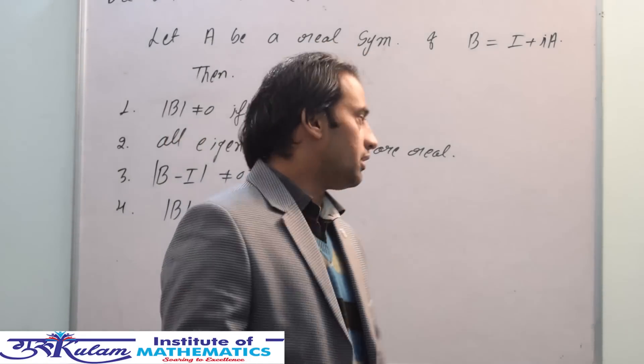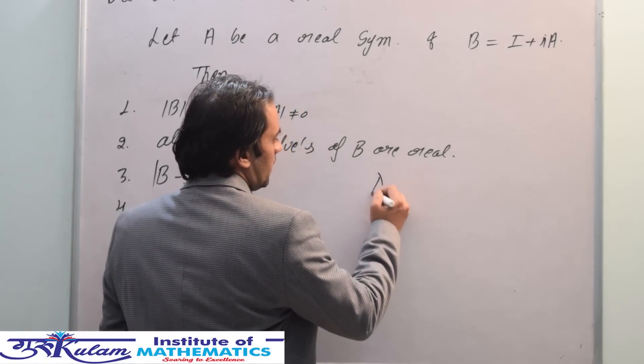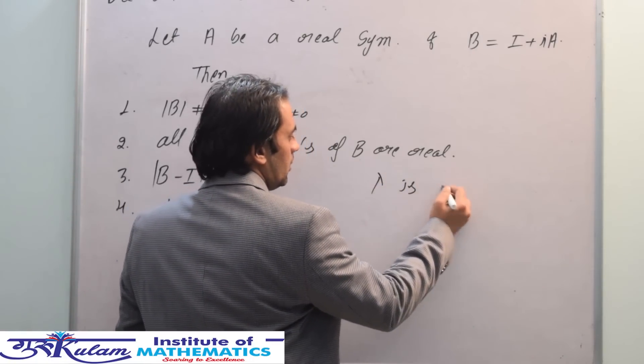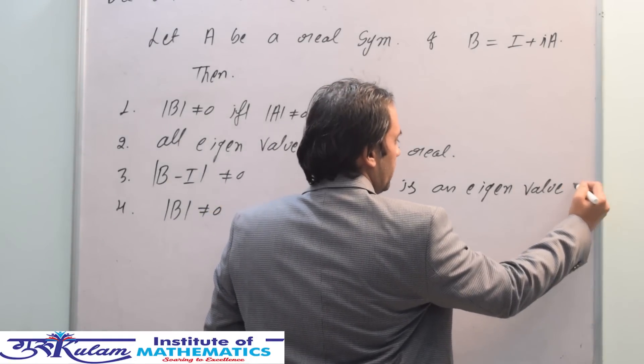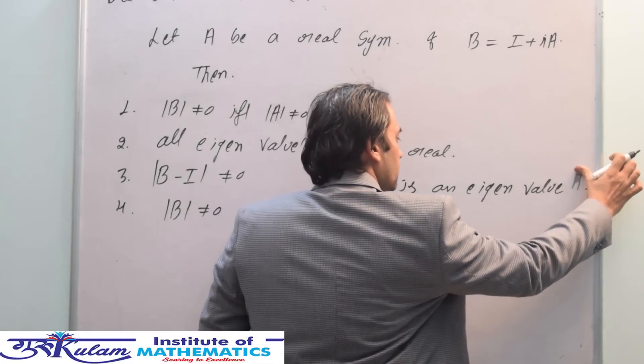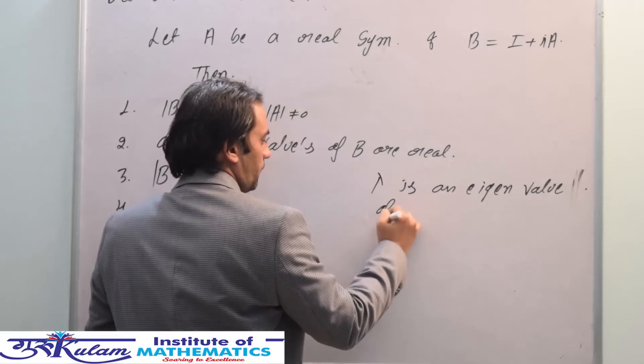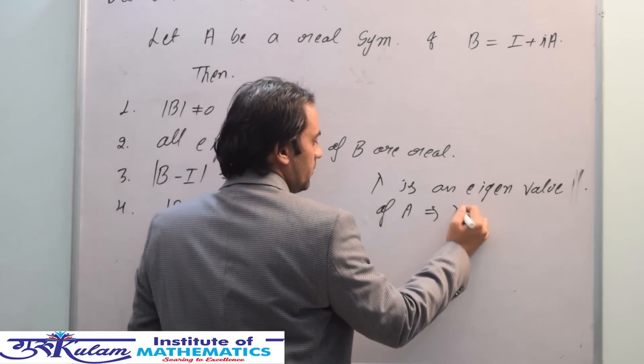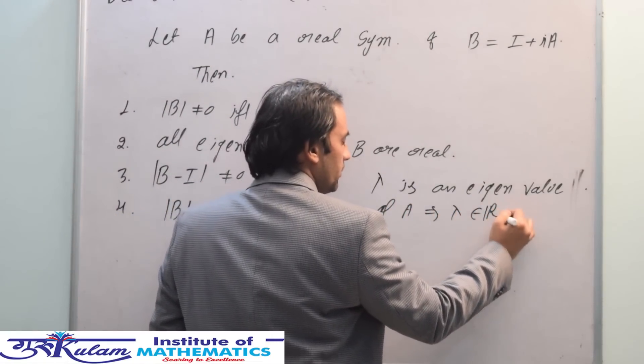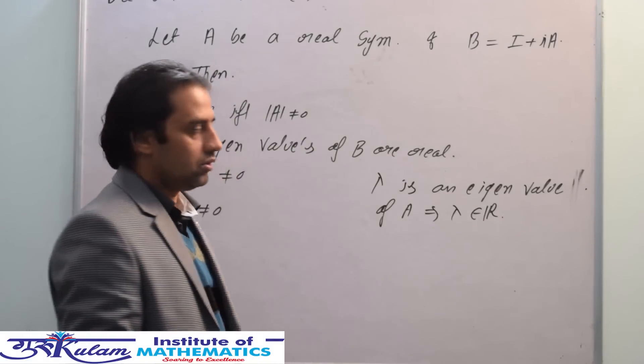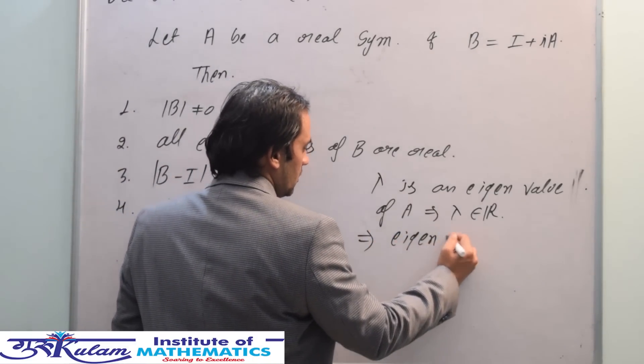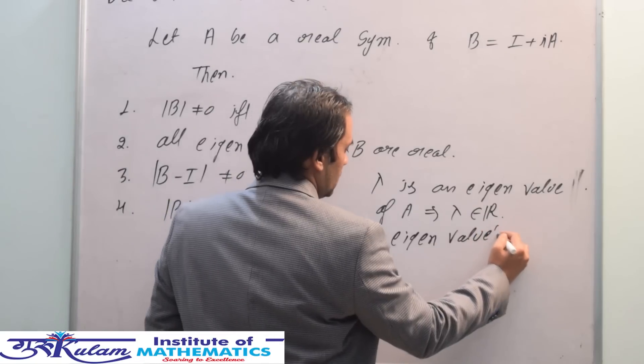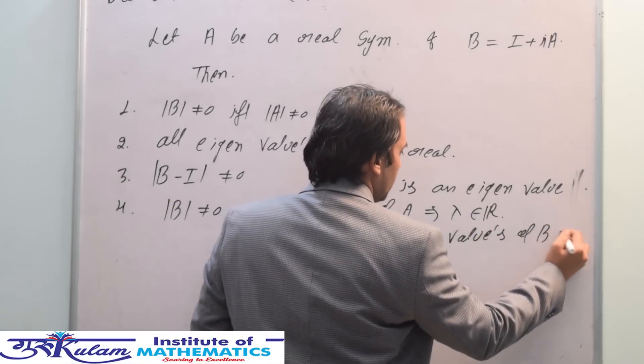If λ is an eigenvalue of A, then λ can be zero or non-zero. This implies the eigenvalues of B are of the form 1 plus λ times i.